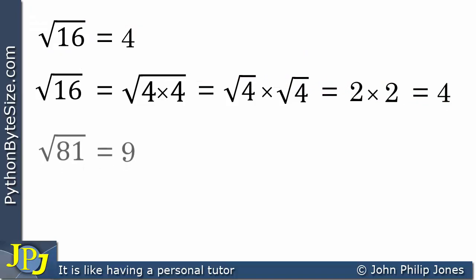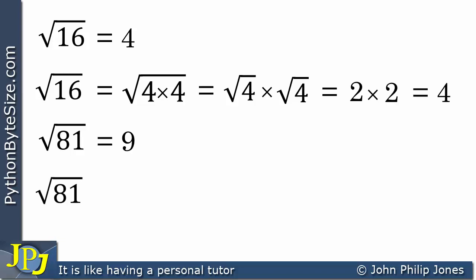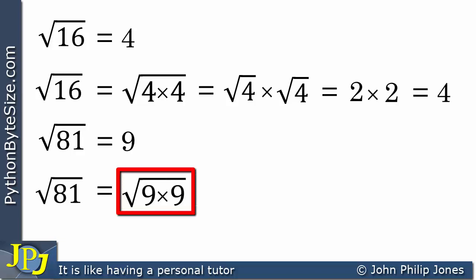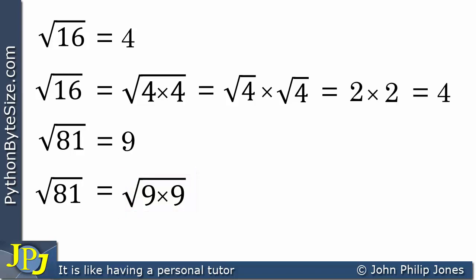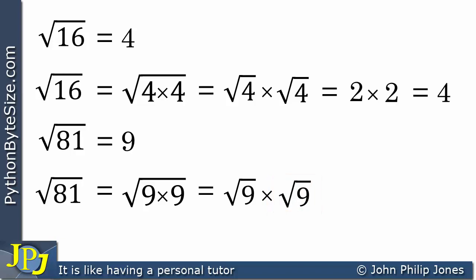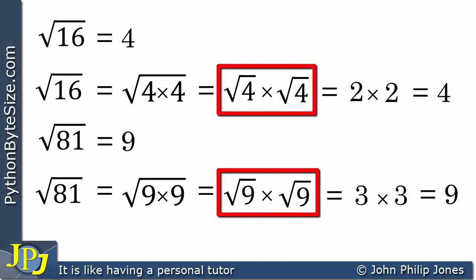Let's consider another example: the square root of 81. The square root of 81 is 9, because 9 times 9 gives us 81. But what we can do is rewrite the square root of 81 as the square root of 9 times 9, and now we can split the square root up: the square root of 9 times the square root of 9. The square root of 9 is 3, so we end up with 3 times 3, which equals 9. This ability to split up a square root will be important for our understanding of complex numbers.